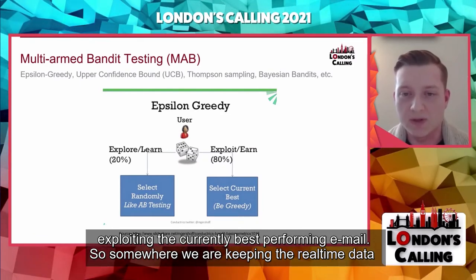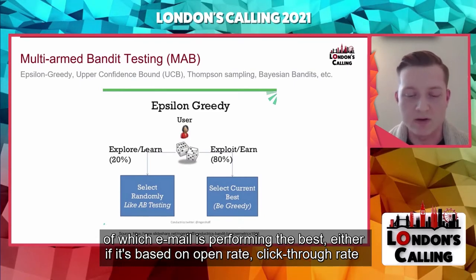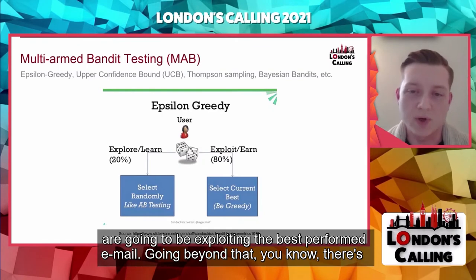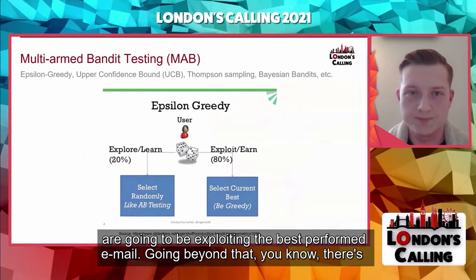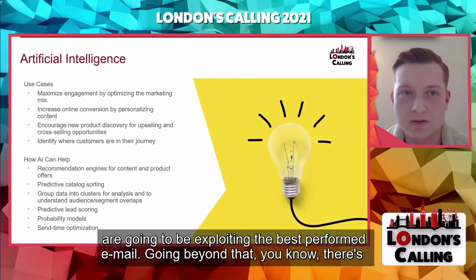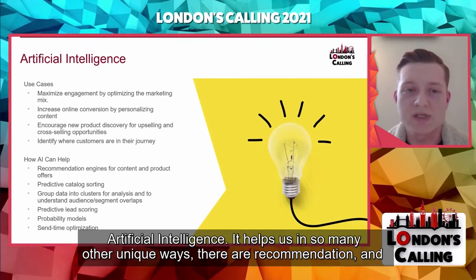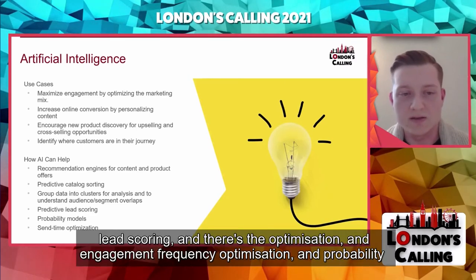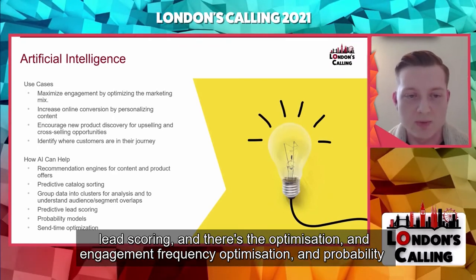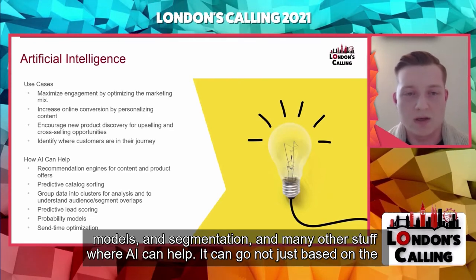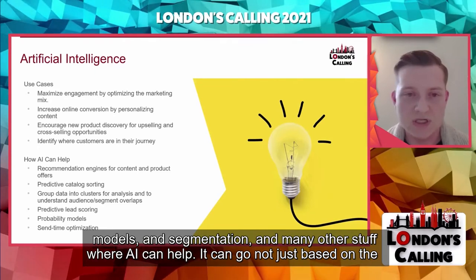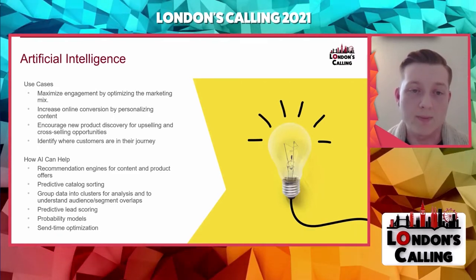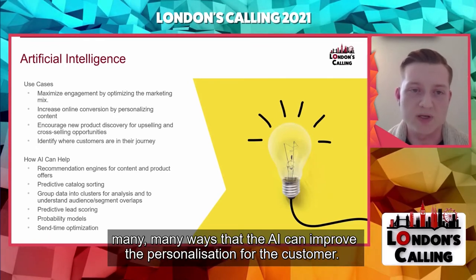We keep real-time data on which email is performing the best — whether based on open rate, click-through rate, unsubscribe rate, or any other KPI — and 80% of the time we exploit that best performing email. Beyond bandit testing, artificial intelligence helps in many unique ways: recommendation engines, predictive catalog sorting, lead scoring, send time optimization, engagement frequency optimization, probability models, segmentation, and more. The AI can work not just on current data but also on historical data, improving personalization for the customer.